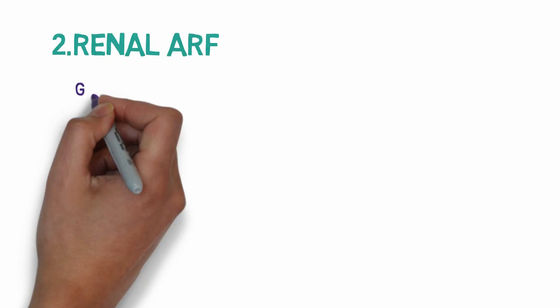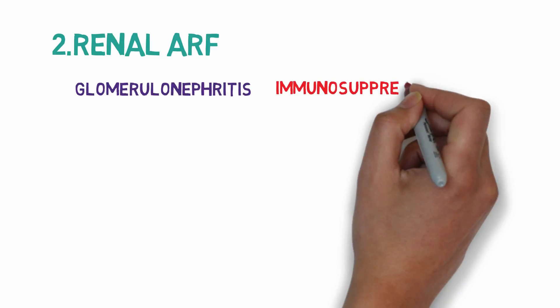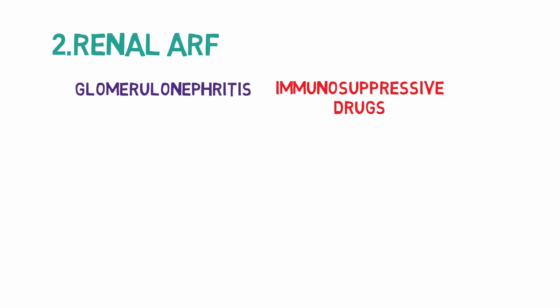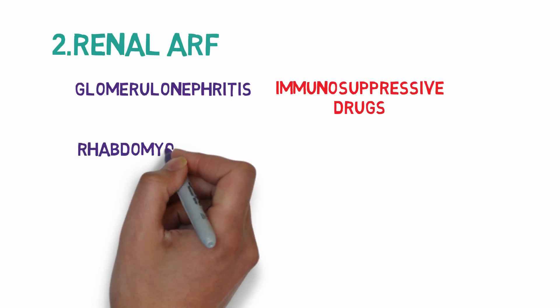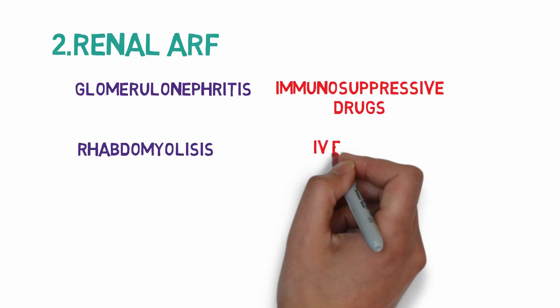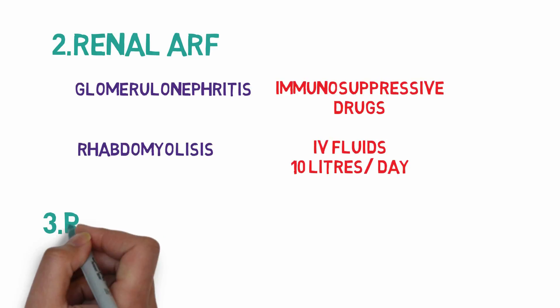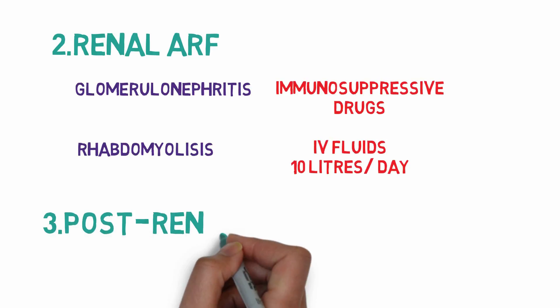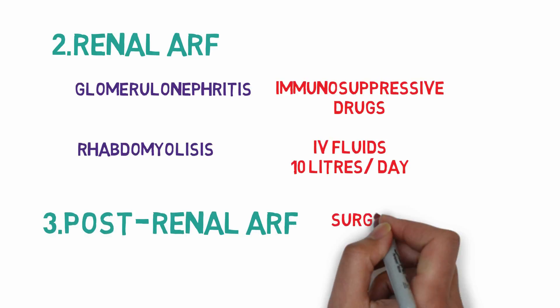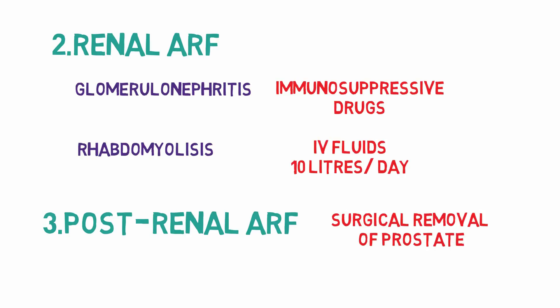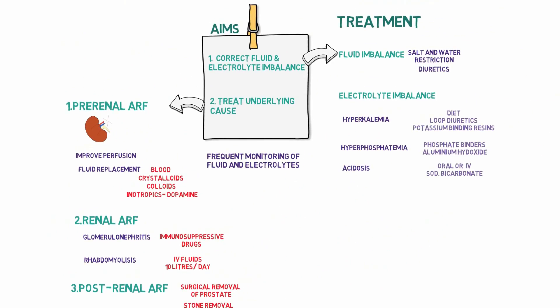For renal ARF, glomerulonephritis is mainly managed by immunosuppressive drugs and corticosteroids. Rhabdomyolysis is managed by IV fluids in a magnitude of 10 liters per day. The treatment of post-renal ARF is straightforward, involving removal of the obstruction in the form of surgical prostatectomy or stone removal.